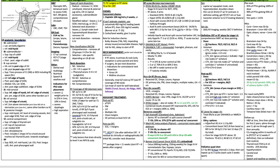Radiation alone for stage 1-4: treat with 6 fractions per week per DAHANCA or MARCH head and neck meta-analysis. Other options include hyperfractionation at 81.6 Gy in 68 fractions at 1.2 Gy BID (RTOG 9003), or concomitant boost: 54 Gy at 1.8 Gy then an 18 Gy boost at 1.5 Gy BID for the last 12 days. Palliative quad shot: 3.7 Gy BID with a 6-hour interval over 2 days, repeated up to 3 cycles, each cycle 3 weeks apart.